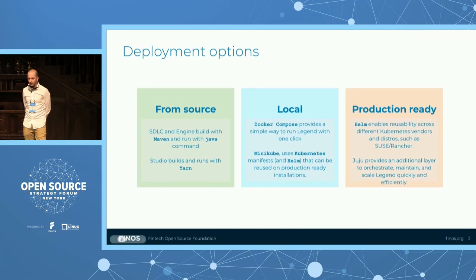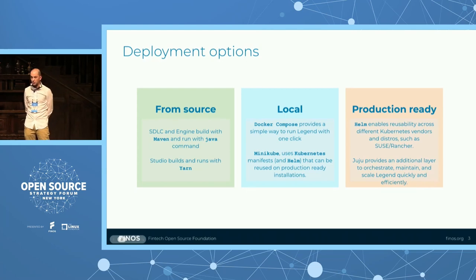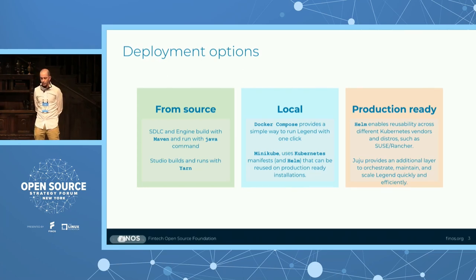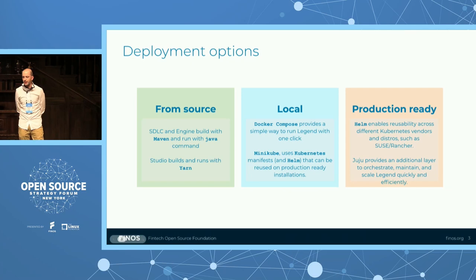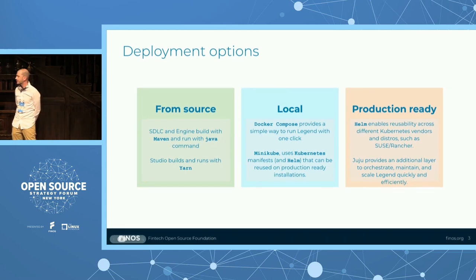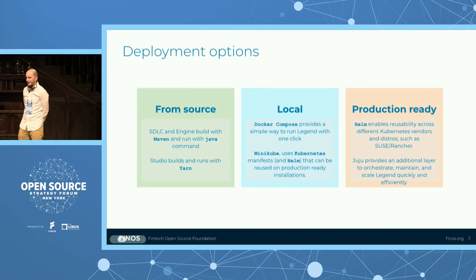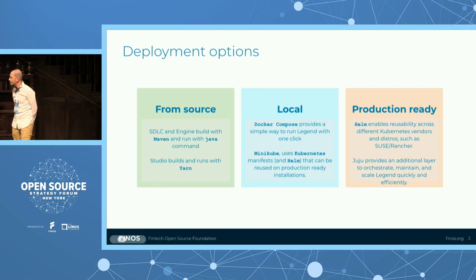This methodology is particularly useful if you want to do a quick demo or show Legend internally using the latest version of the software. But what if you are trying to change the code of Legend and want to see your change running locally? In that case, you would need to build the software from source — probably the longest and most difficult approach. It takes time and relies on Maven and Yarn.